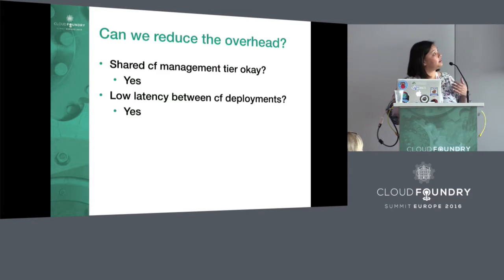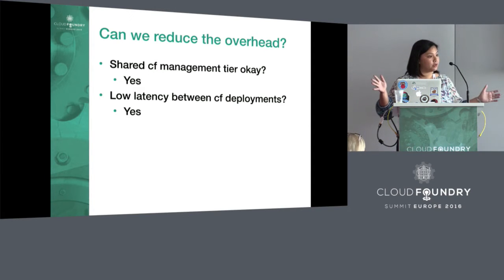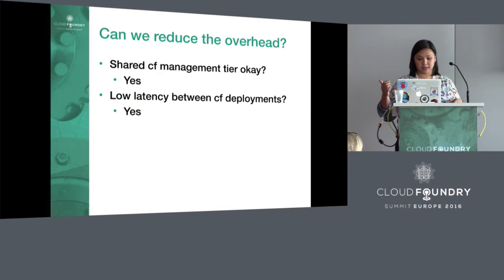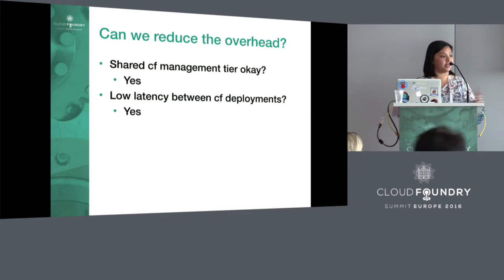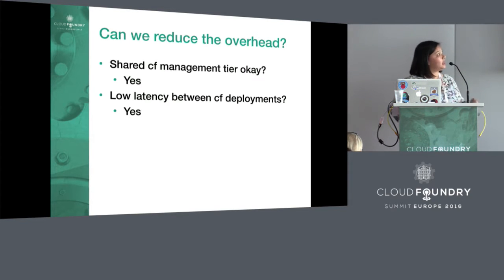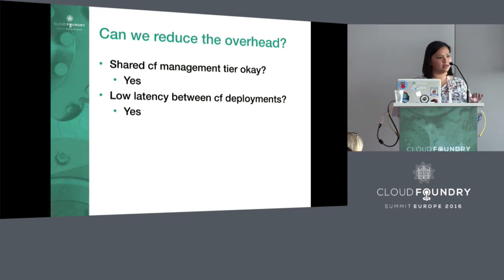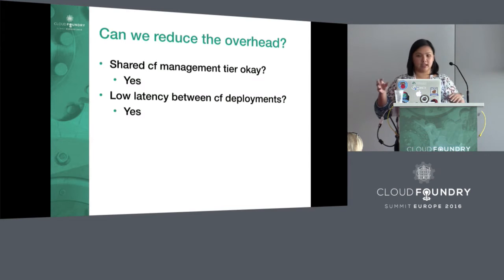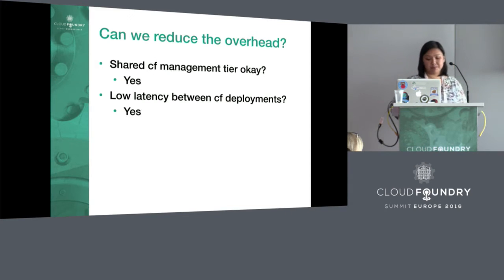Is it okay to have a shared single management tier between those CF deployments? One set of admins for the whole deployment, one set of data stores — a Cloud Controller database or a blob store — might be some concerns you have there. And the second question is: is the latency low between those deployments? We're not specifically solving for instability introduced between shared components as latency increases, although that may be addressed later. But for now, if yes to both, then isolations could help reduce some of your overhead.